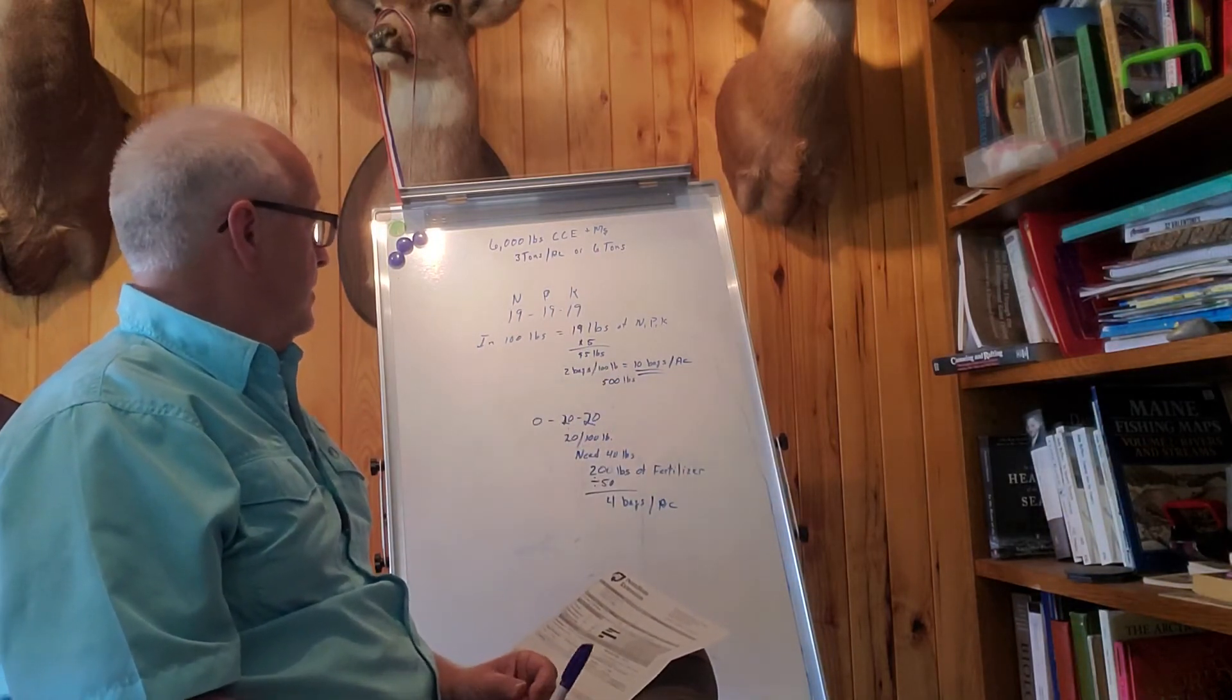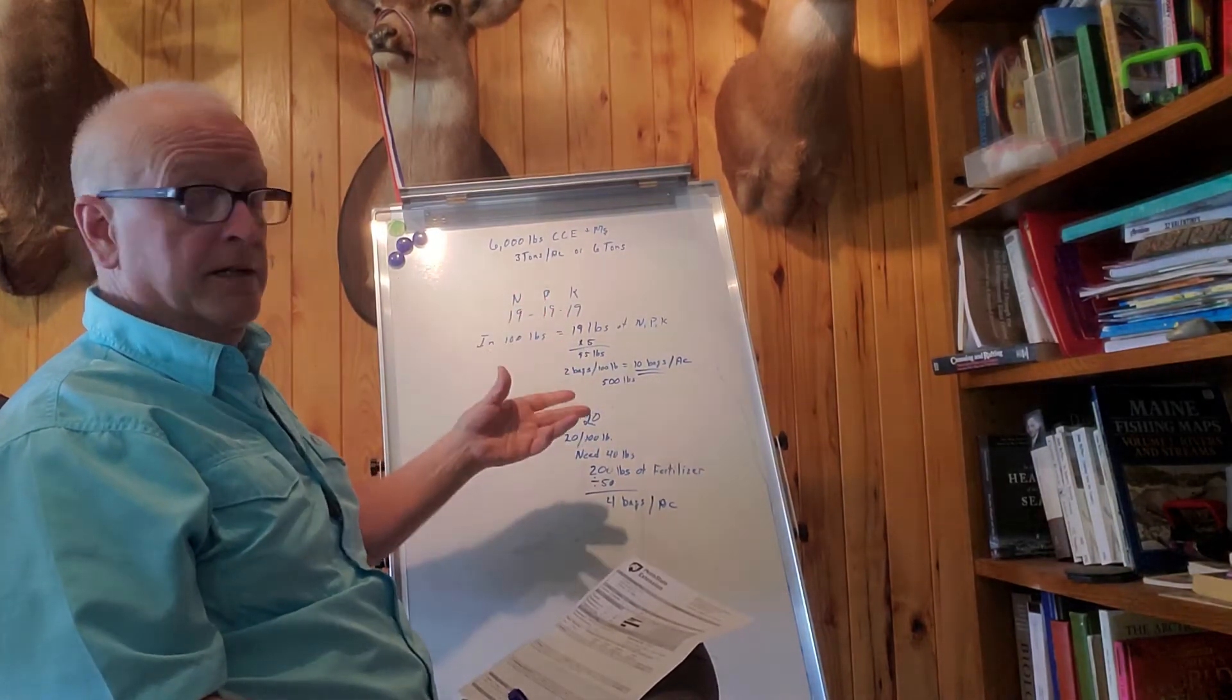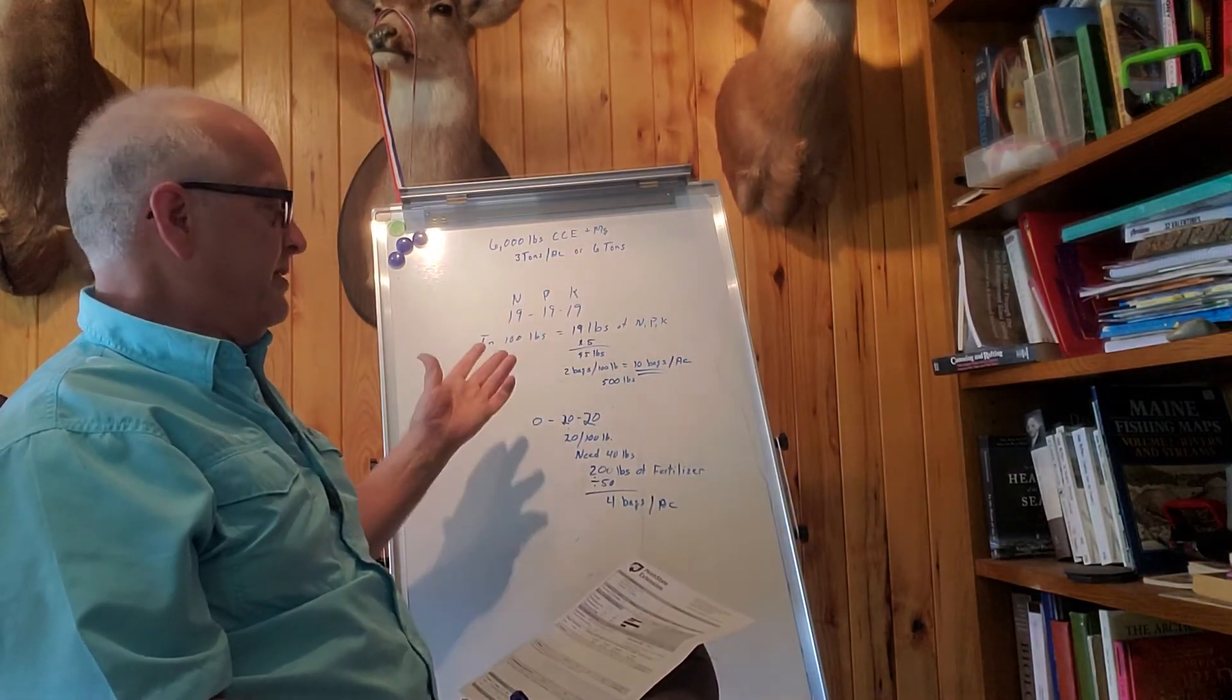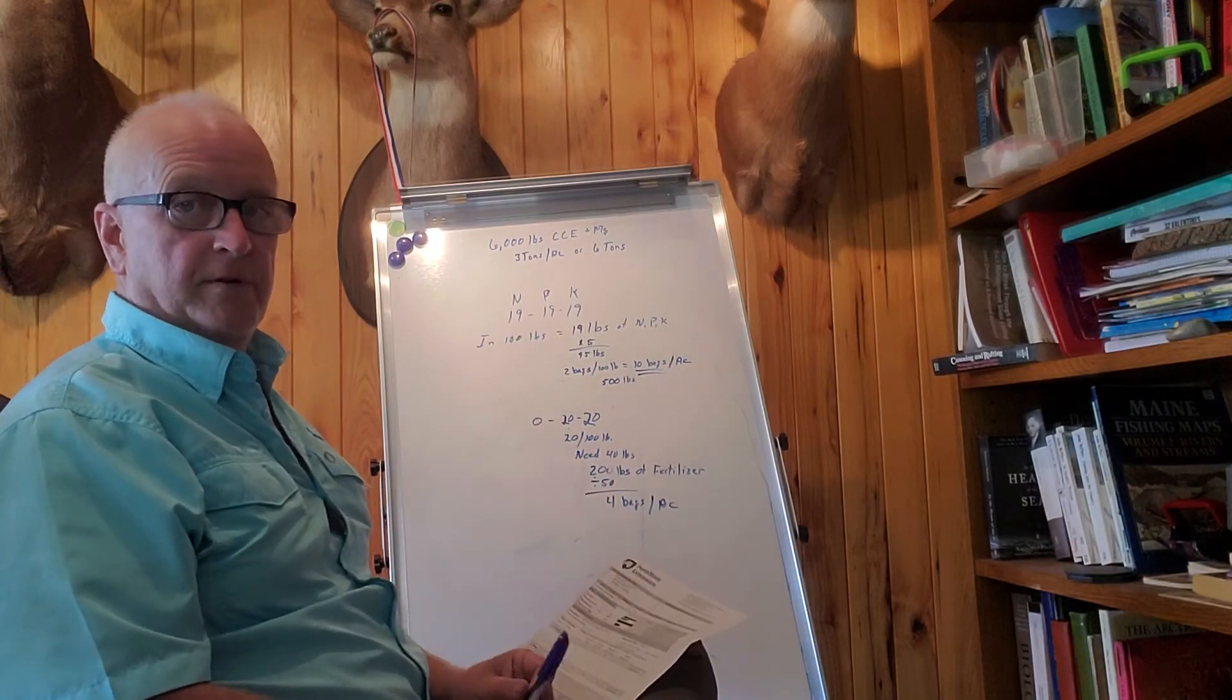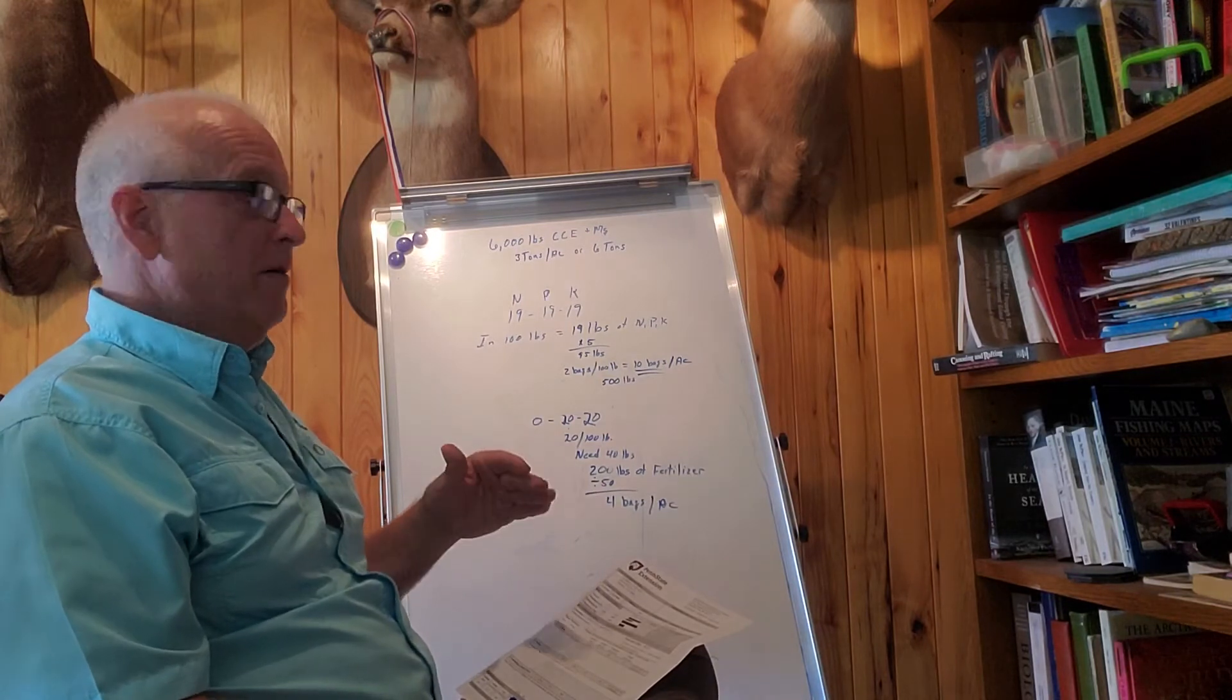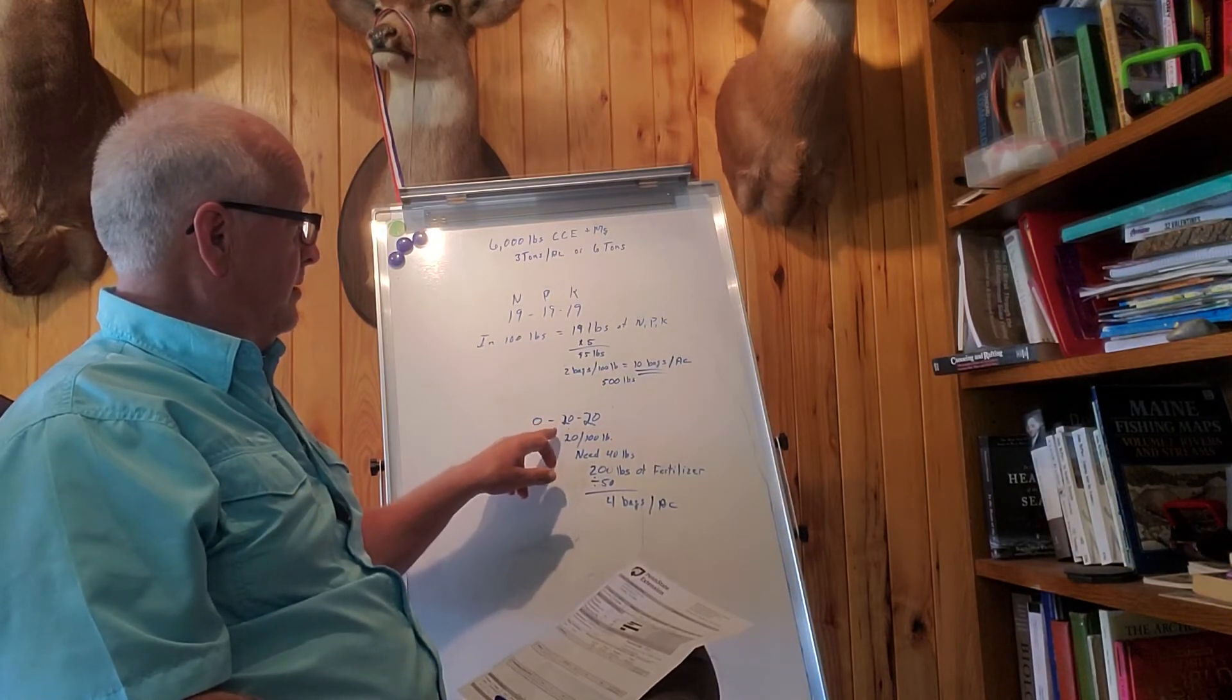Now what do you do about getting the rest of your nutrients without going over on nitrogen? You don't want to go over on nitrogen because it's a waste of money and it's pollution. You can do the same kind of math with all this. Let's say, for instance, they also have at the store a 0-20-20 bag fertilizer. What's left? We have 40 pounds left to go on our phosphate and potassium.